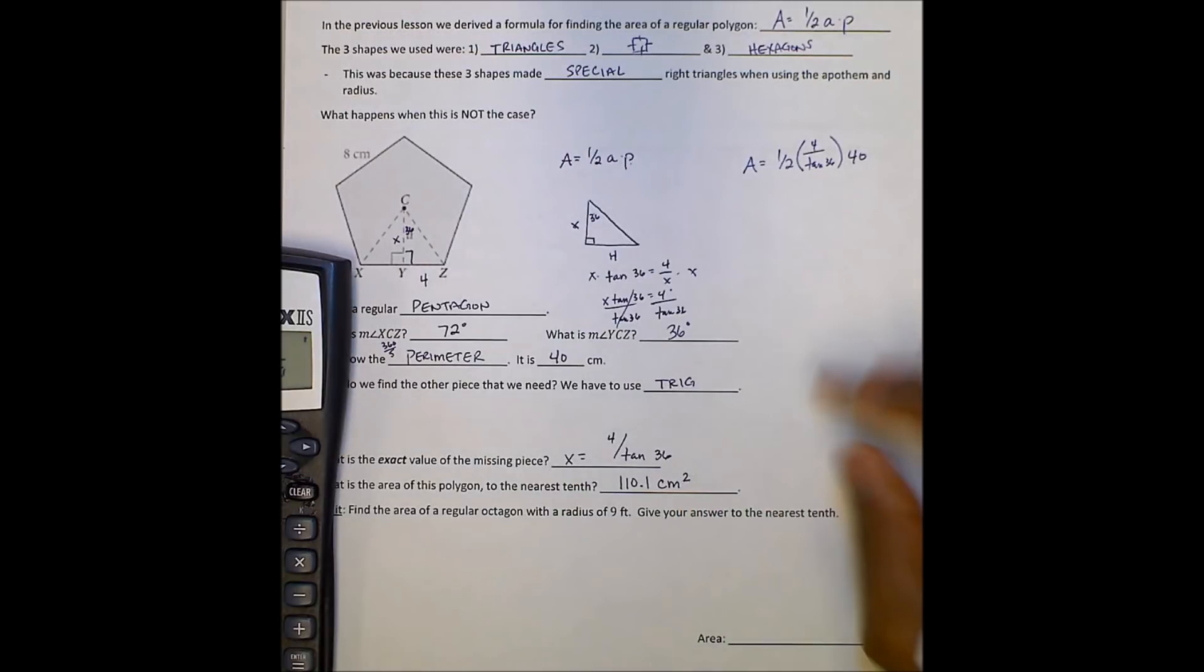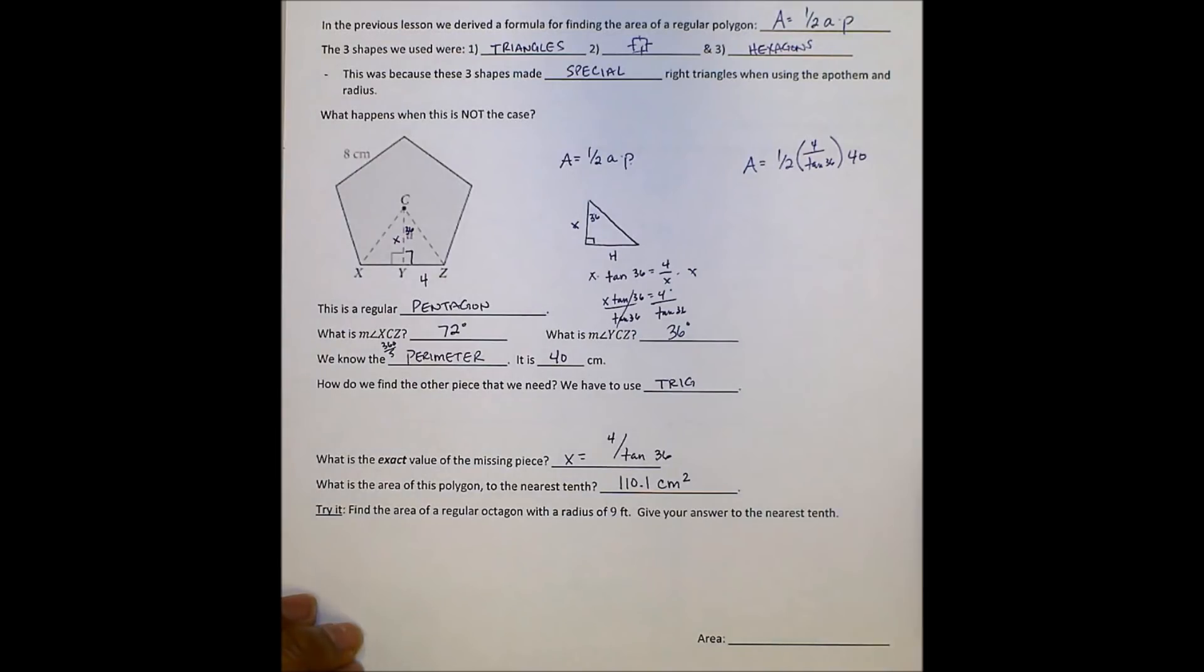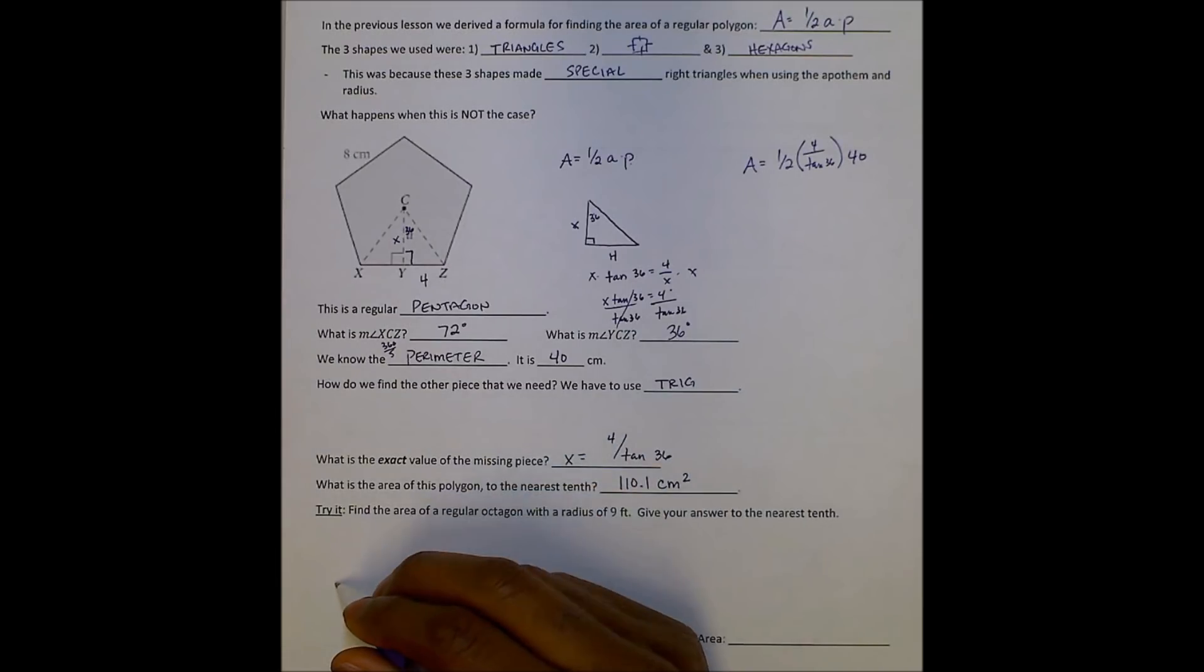The bigger your numbers are, the more rounding incorrectly or rounding at all really will affect your answer. So when possible, we want to use our exact value to get to our final answer. All right, it says, find the area of a regular octagon with a radius of 9 feet. Give your answer to the nearest tenth.